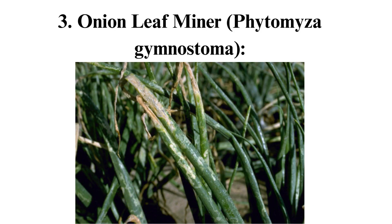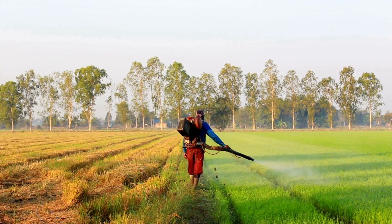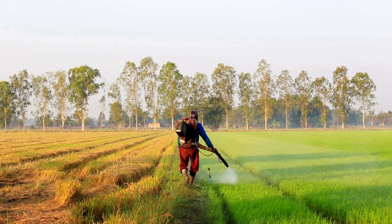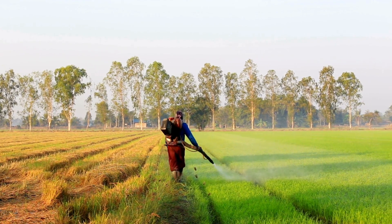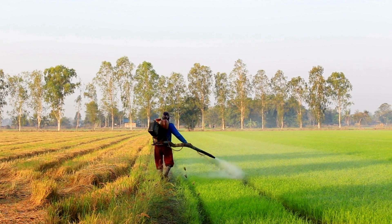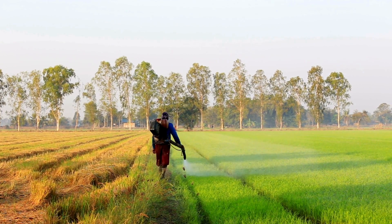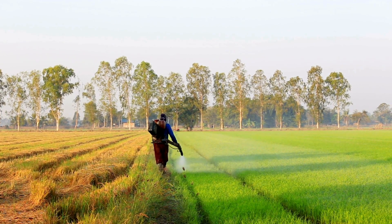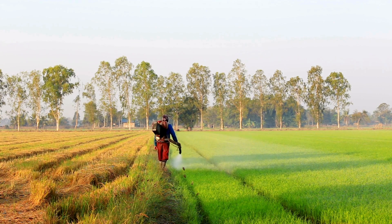3. Allium leafminer (Phytomyza gymnostoma). The larvae of this fly tunnel into onion leaves, causing damage. Combat allium leafminer with spinosad, which disrupts the nervous system and acts as a stomach poison.